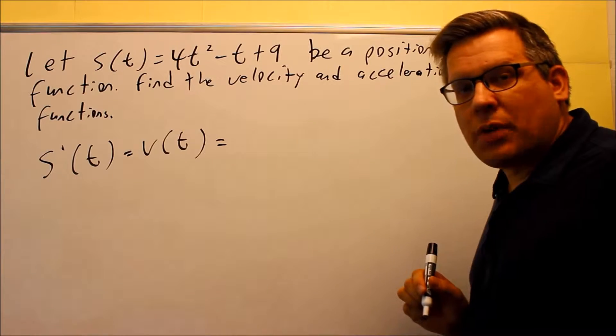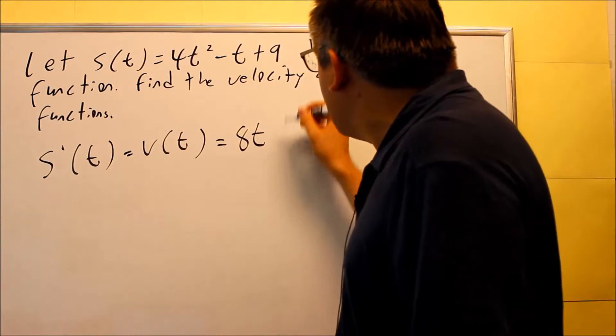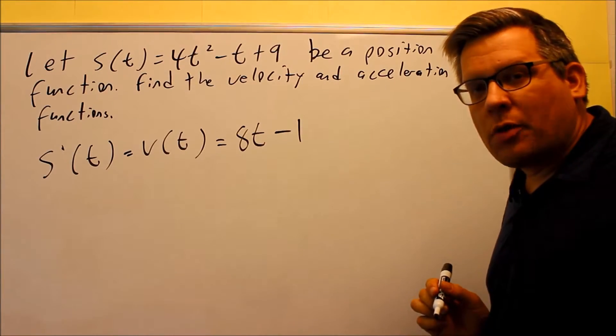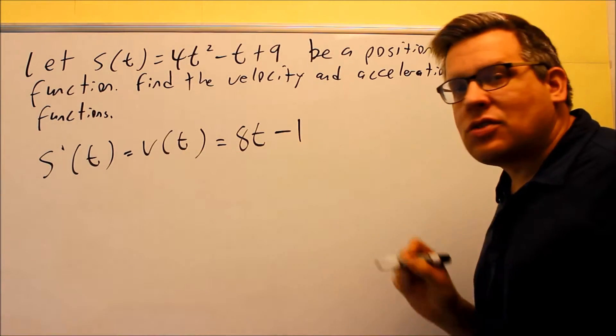When I do the derivative using the power rule, 2 comes down, multiplies by the 4, we get 8t. For this one, there's a minus 1 in front of the t. So if you do that derivative, you get minus 1. So this is our velocity. Velocity function is 8t minus 1.